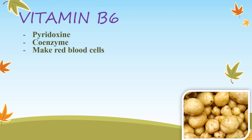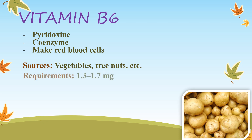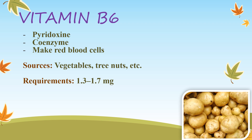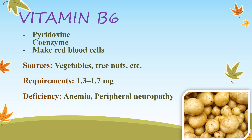Vitamin B6 — pyridoxine — is a component of pyridoxal phosphate (PLP), which acts as a coenzyme for transaminases and decarboxylases. It is required for tryptophan metabolism and helps to make red blood cells. Sources: vegetables, meat, tree nuts, and bananas. Recommended daily allowance: 1.3 to 1.7 mg. Deficiency leads to anemia — a condition in which the body does not have enough red blood cells — and peripheral neuropathy, which involves damage to the peripheral nervous system. Overdose leads to impairment of proprioception and nerve damage.